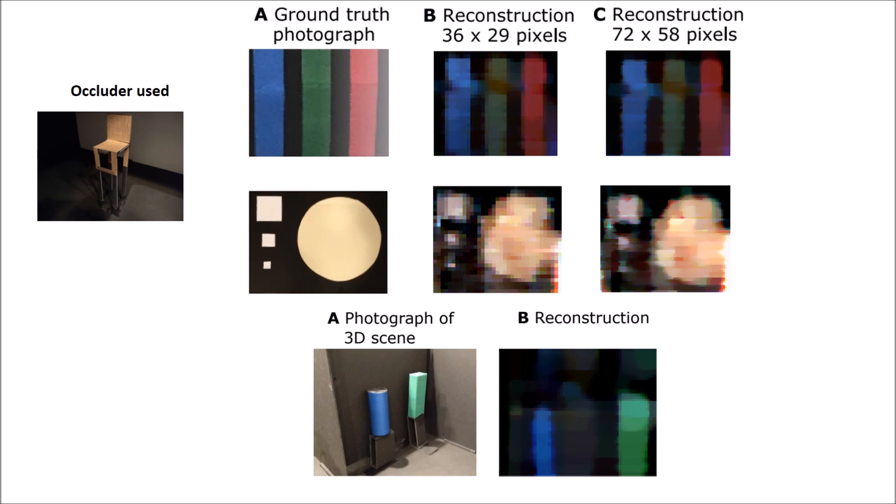Lastly, we demonstrate reconstructions of both 2D and 3D, fully reflective, flat lit scenes made of coloured cardboard. The occluder here used is non-black and also 3D.